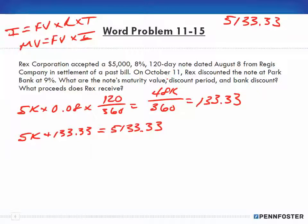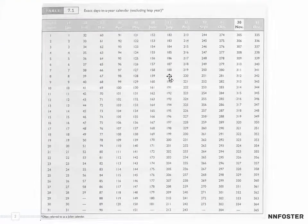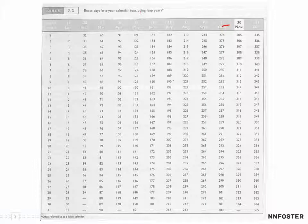Next we need to figure out the discount period. We're talking about from August 8th to October 11th. Let's jump up to our Julian calendar and look at August 8th. August 8th is 220.